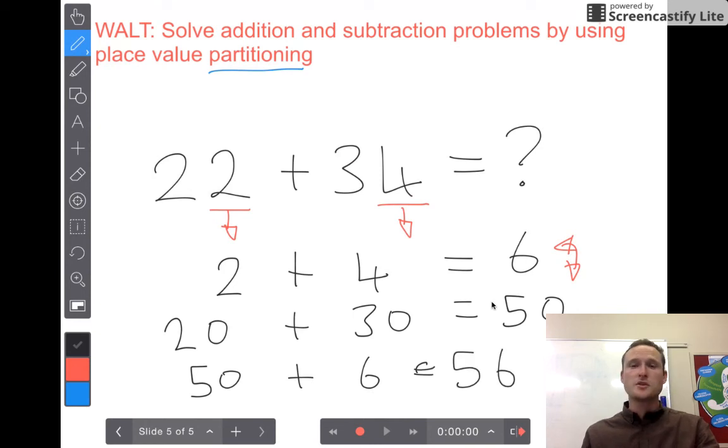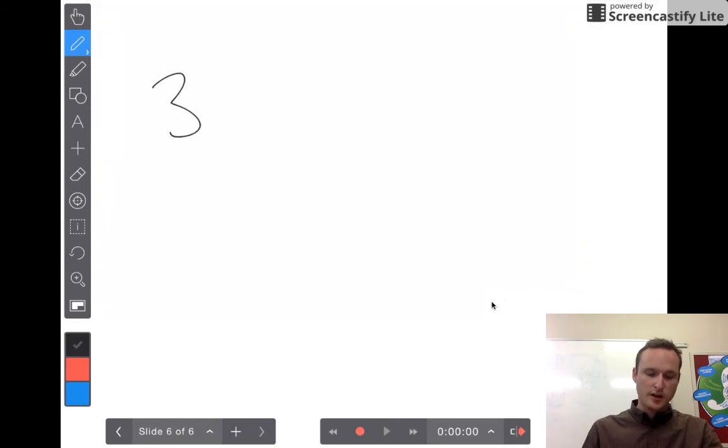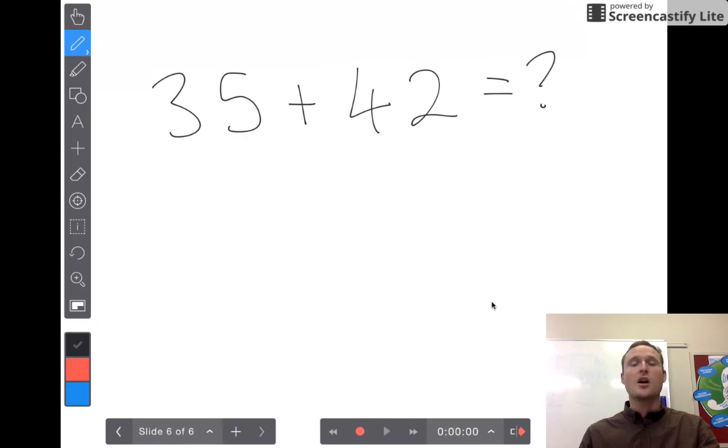Let's try it one more time so you can see all the steps. What if I had the number 35 plus 42. Again, off the top of my head I don't know what the answer is, so I'm going to use place value partitioning to break it up.